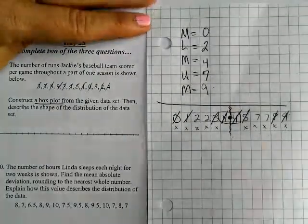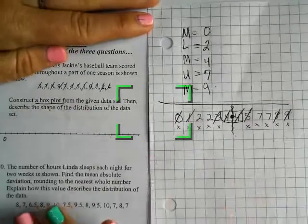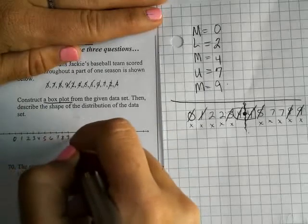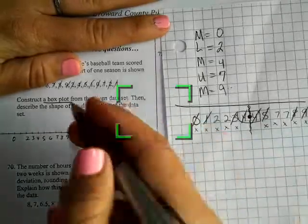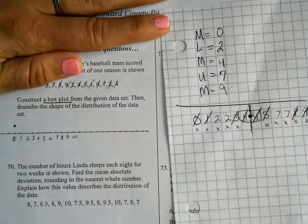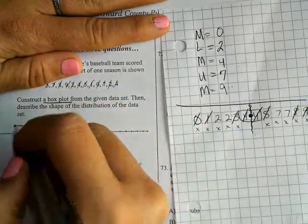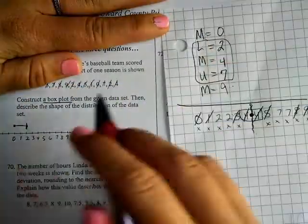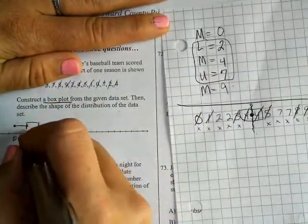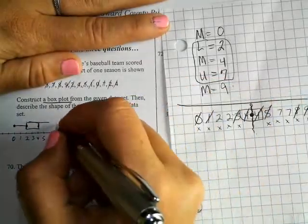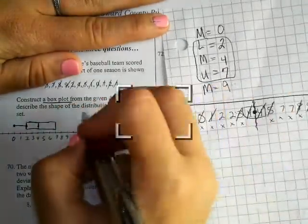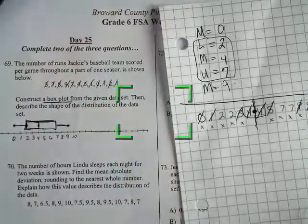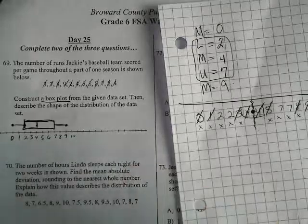Now I'll construct the box plot from zero to ten. The first dot is at zero. A whisker goes from the minimum to the lower quartile at two. The box starts with lower quartile, median is four — the middle line of the box — and the upper quartile is seven. The maximum is nine, completing the box plot.